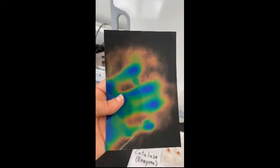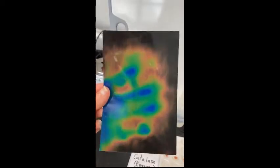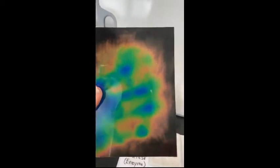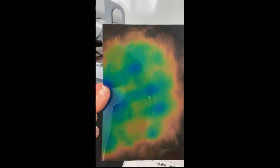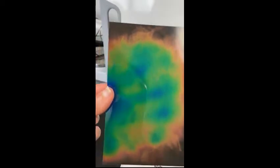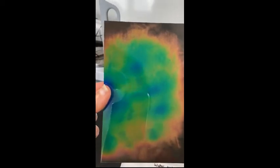Hopefully you had a chance to play with this and you have some understanding as to how the heat-sensitive paper makes this beautiful color spectrum. We're going to use this to better understand what's going on with the reactions in the catalase lab.